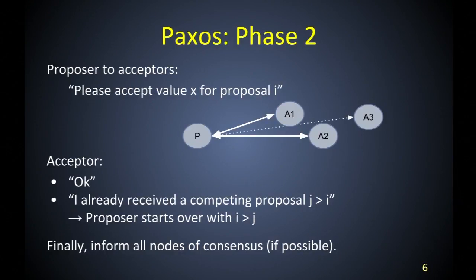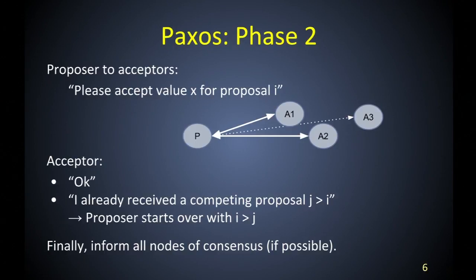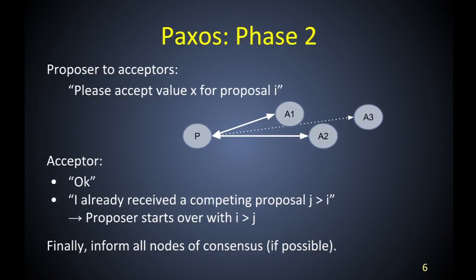In phase two, the proposer sends messages to all participating nodes: 'Please accept this value — could be my value, could be someone else's — for this proposal number I.' Acceptors can say 'okay, I accept your value,' or 'I already received a competing proposal with a higher sequence number — someone else ran phase one and I promised not to participate in lower-numbered proposals, sorry.' The proposer then starts over with a higher sequence number. If for any reason you do not get the majority to accept, you also start over.